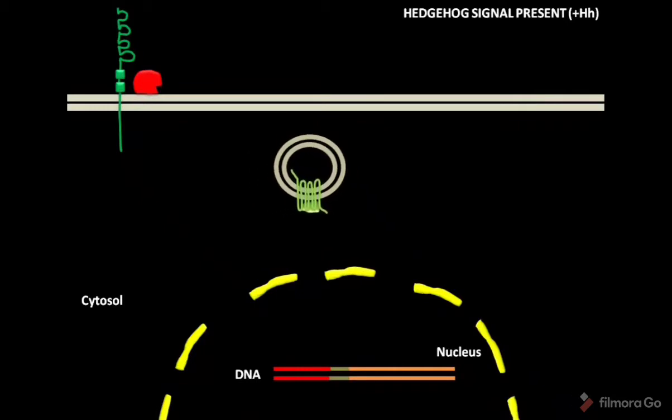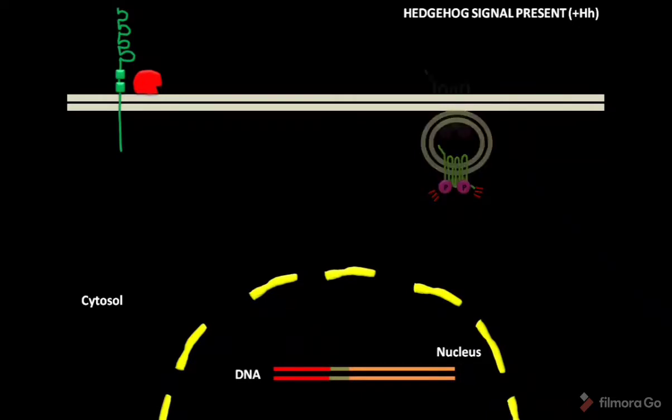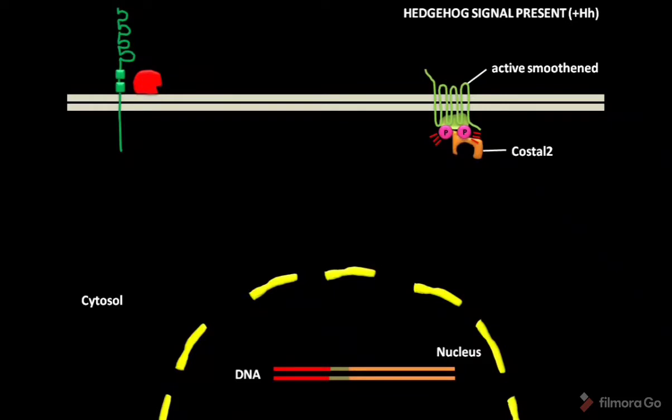Then the PKA and CK1 phosphorylate and activate Smoothened. Then the activated Smoothened is recruited to the plasma membrane by vesicle fusion. The activated Smoothened then recruits the protein complex containing COSTAL2, CI155 and fused.